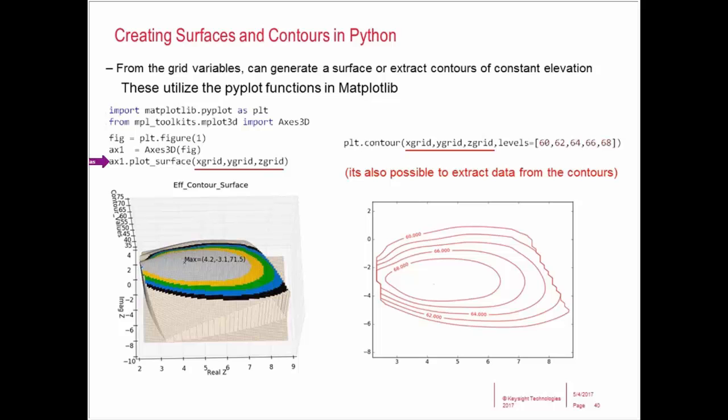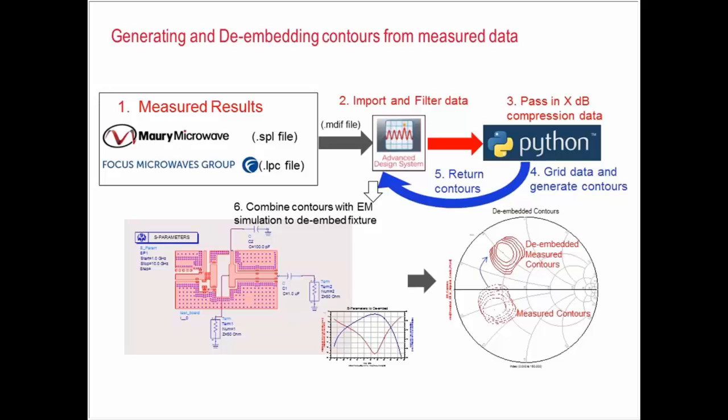Basically, I can take those variables in Python and just plot things. I can plot a surface. There's a function to do that. And I can also generate contours. A surface plot and a contour plot are actually very similar if you think about it. It's really a way to represent three-dimensional data. I can generate contours in this manner, and it's also possible to extract the data. I can extract all of the points on this line out of Python.